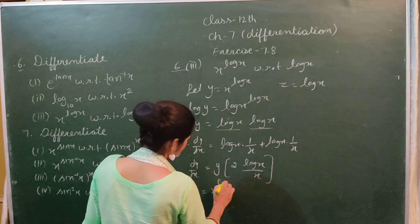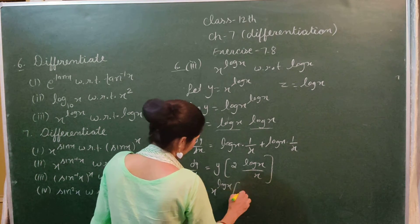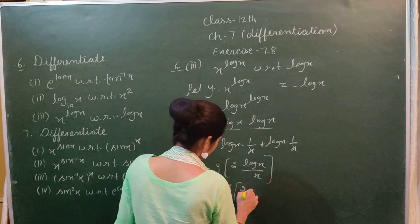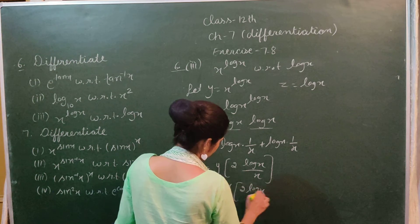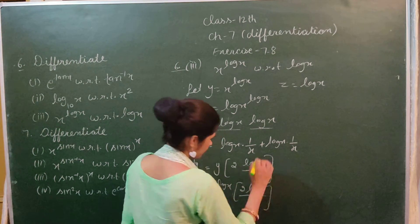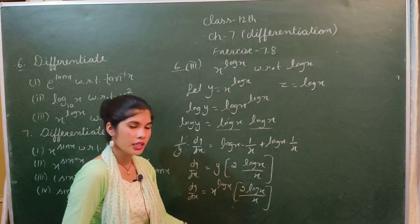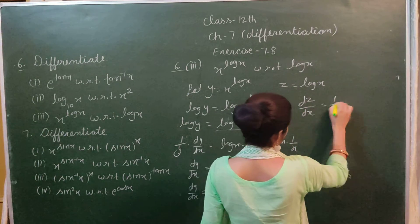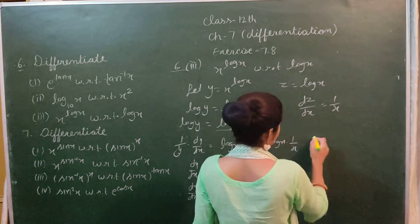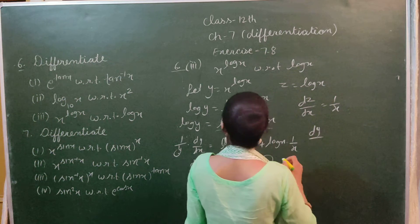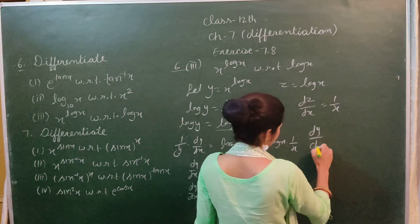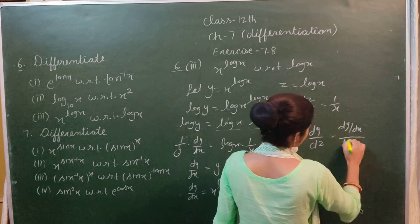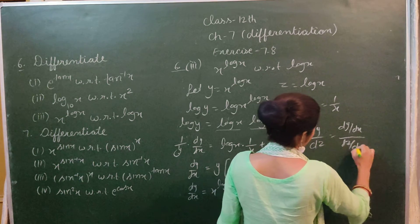Substituting y = x^(log x), we get dy/dx = x^(log x) times (2 log x / x). Then we differentiate z = log x with respect to x, which gives dz/dx = 1/x.